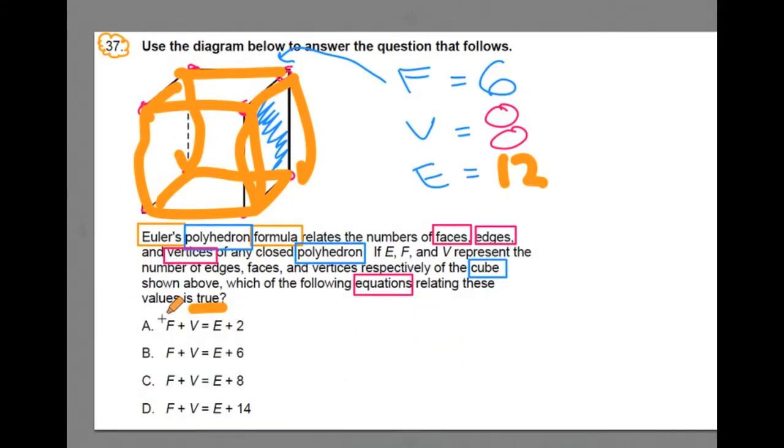Now let's look at A. Our true statement here, where it says faces, six, plus vertices, eight, is equal to edges, twelve, plus two. This right here is a true statement, and it works off of Euler's formula.